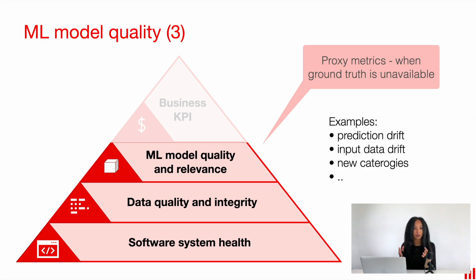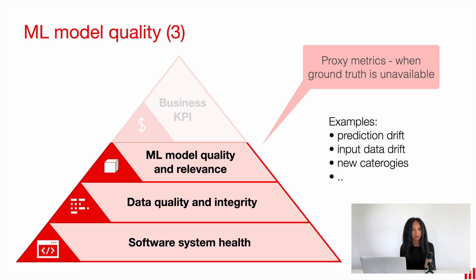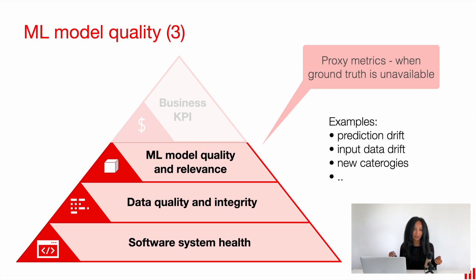Together with model performance, you might monitor some proxy metrics, especially if your ground truth is delayed and you cannot calculate performance in time. In this case, you might want to monitor for metrics like prediction drift, input data drift, or share of new categories, because input data is always at hand and you can calculate quite a lot of different statistical metrics on top of it. It can be a perfect early signal of potential problems.